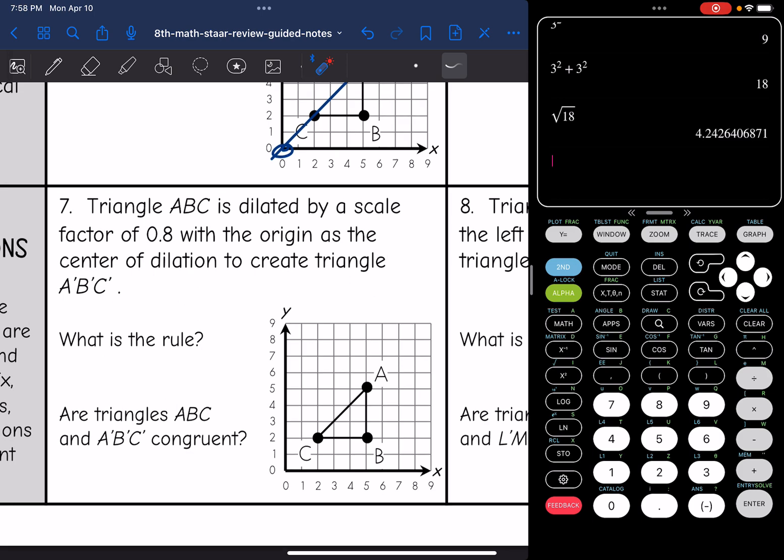Let's look at this picture right here. It says triangle ABC, this one right here, is going to be dilated with a scale factor of 0.8, with the origin as the center of dilation, to create the triangle A', B', C'.